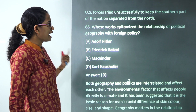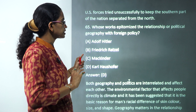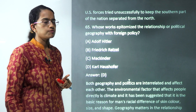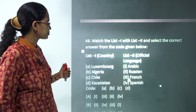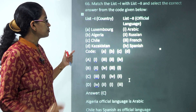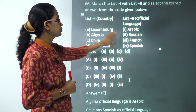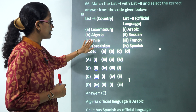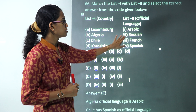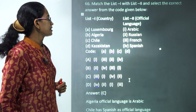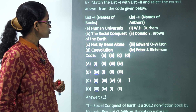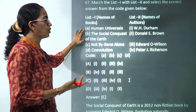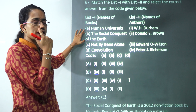Whose work has been epitomized as political geography with foreign policy? Haushofer talked about political geography with foreign policy — a very direct question. The next question requires matching countries to languages: Luxembourg has French, Algeria has Arabic, Chad has Spanish, and Kazakhstan has Russian.